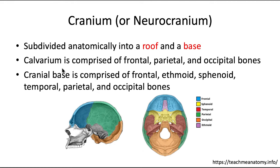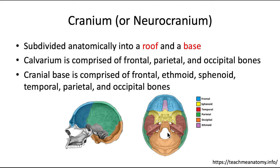The calvarium is comprised of the frontal, parietal, and occipital bones. The cranial base is comprised of a few more: the frontal, ethmoid, sphenoid, temporal, parietal, and occipital.